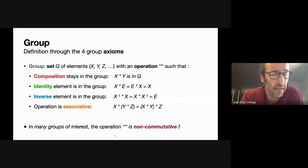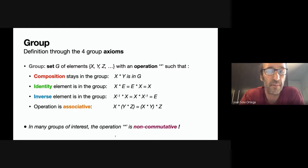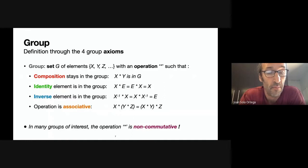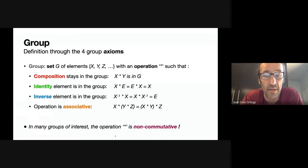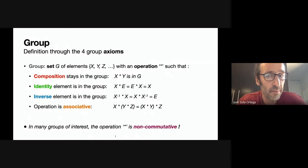The group has an element called the identity, so that if you operate any member with the identity, you get the same member. The group also has for each member x an inverse, which is also in the group — x inverse times x gives you the identity. And the last axiom, which is less obvious but necessary, is that this operation is associative — you can change the order of operations and the result is the same.